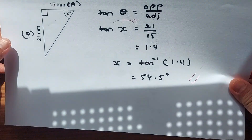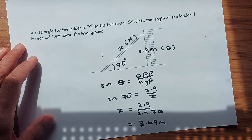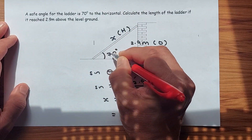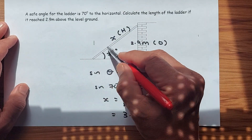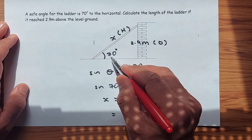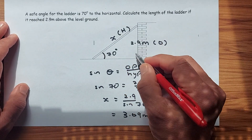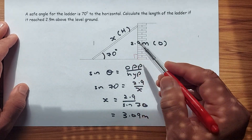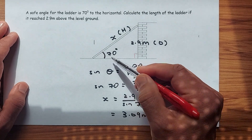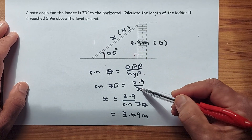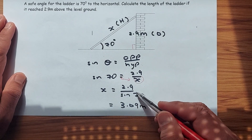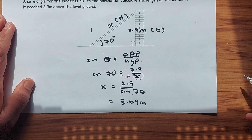The last section is a word problem. A safe angle for a ladder is 70 degrees to the horizontal; calculate the length of the ladder if it reaches a height of 2.9 metres. The triangle is drawn: the angle is 70 degrees, the opposite side is 2.9, and the hypotenuse is the ladder length X. Since you have O and H, use sine: sin 70 equals 2.9 over X. Swap places — X equals 2.9 divided by sin 70. The answer is 3.09 metres.